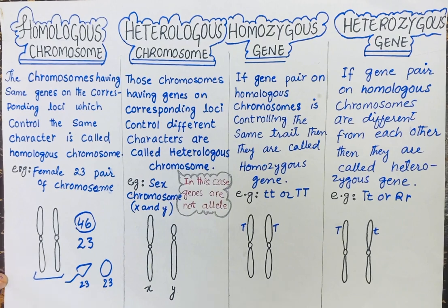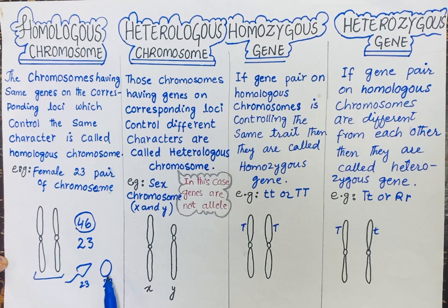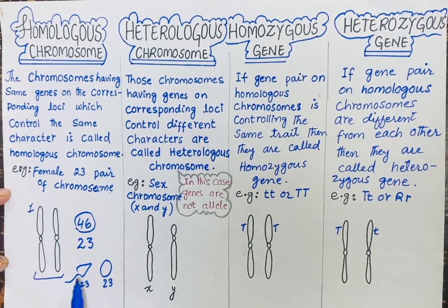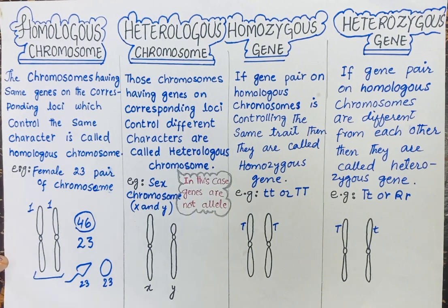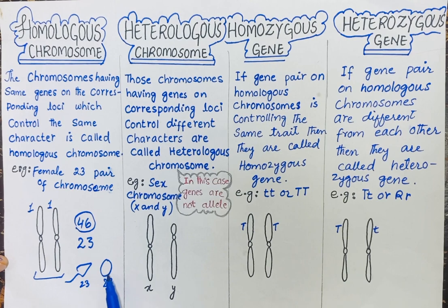Now as an example, the first chromosome present in the sperm and the first chromosome present in the egg — these two will form a pair, and this pair will be called a homologous pair. Similarly, the second chromosome will also form a pair. So in total, a human body has twenty-three pairs of chromosomes.